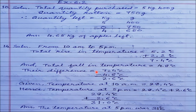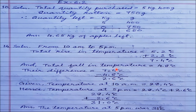We now find the difference of total rise and total fall: 7.4 minus 4.8 degrees centigrade. 4 minus 8 — borrow 1 from 7, so 14 minus 8 is 6, and 6 minus 4 is 2. The difference is 2.6 degrees centigrade.